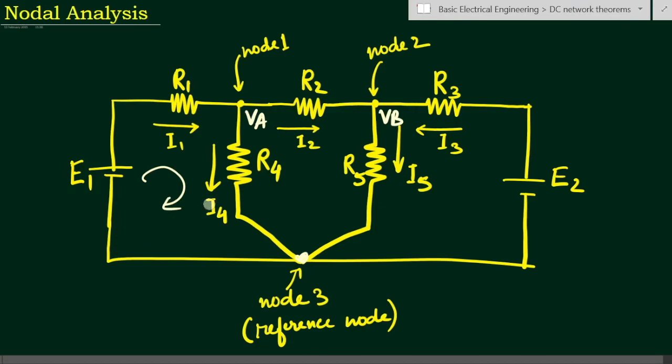If we consider Kirchhoff's voltage law in case of loop analysis, we have to find out loop equations. Here we have one loop, another loop, and another loop — so we will have three loop equations and three loop currents. But in case of nodal analysis, we will find out only two equations.